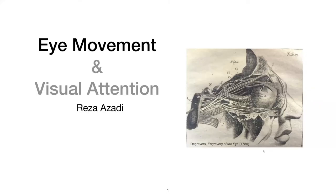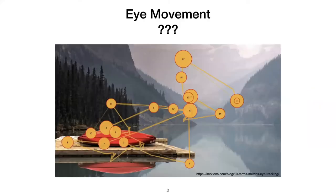In normal life, whenever we want to look at a scene, we move our eyes around it. For example, these are the fixations of a typical subject on a picture — the subject makes saccades, fixating on the boat, the mountain, the lake, the deck, different parts. But the first question I want to ask is: why do we need eye movements? What is the function and benefit of eye movement?